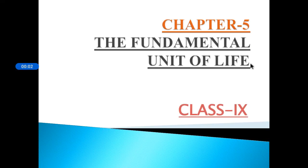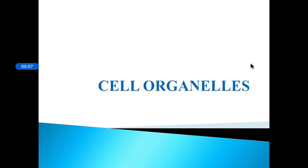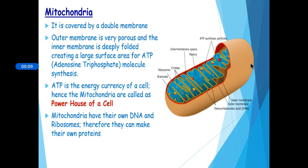In this PPT video we are going to learn about three cell organelles. The first one is mitochondria. For any activity we need energy, so the energy required for various chemical activities needed for life is released by mitochondria, in the form of ATP molecules — adenosine triphosphate. Because mitochondria release power, it is known as the powerhouse of the cell.